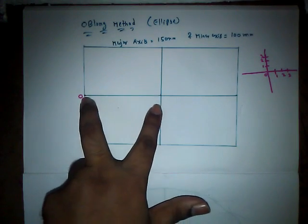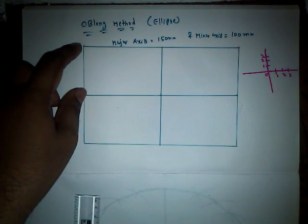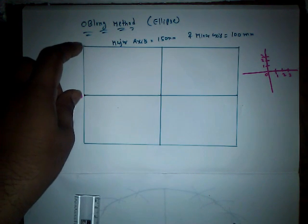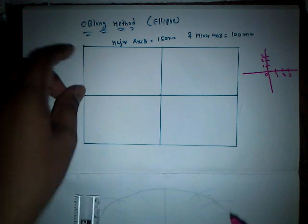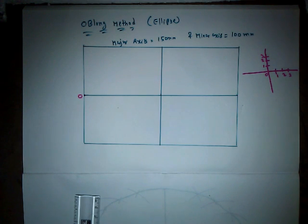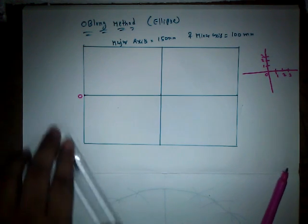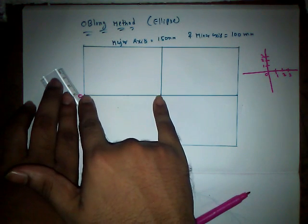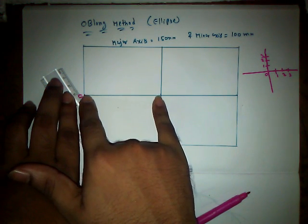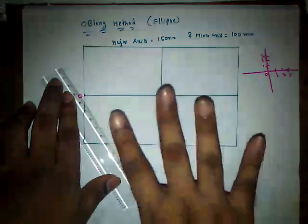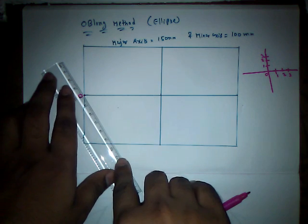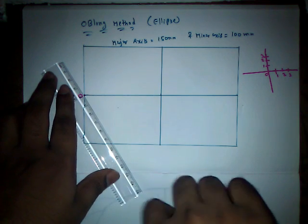We need to divide this part and this part into equal number of parts, and the number of points on the x-axis should be equal to the number of points on the y-axis. I will tell you the easiest method to divide things into equal parts. I want to divide this x-axis and y-axis into 4 parts, which means I need 3 points.